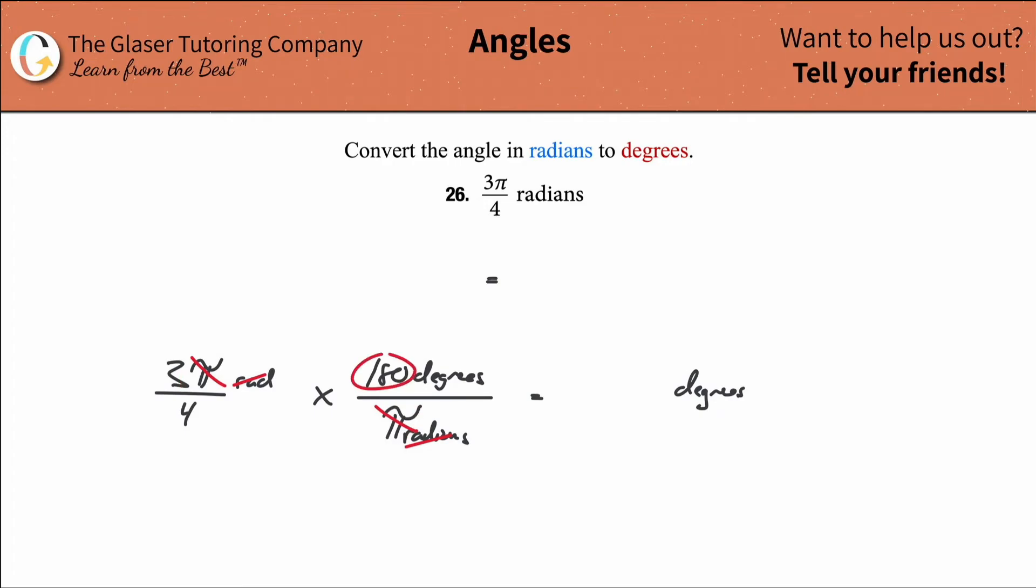Also, I realize that I can start simplifying these two. So does 4 go into 180? Well, you can always check that out with the calculator, and it does. So it goes into 180 45 times. And therefore now when we simplify this, it's just simply 3 times 45, which would be about 135 degrees.